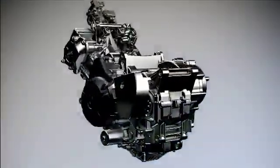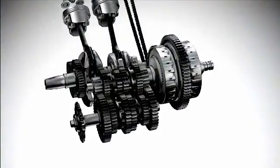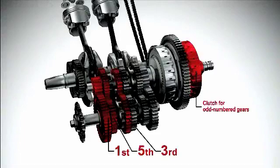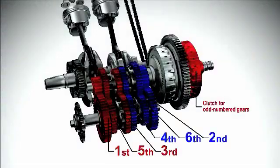The dual clutch transmission has two separate clutches for odd and even numbered gears. One for 1st, 3rd and 5th gears and another for 2nd, 4th and 6th gears.